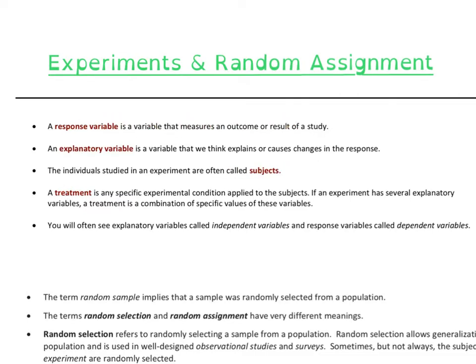The response variable is the outcome that you're measuring in the study. The explanatory variable is what we think would cause the response — this is just another way of saying the treatment. A treatment is what you put on the subject to see what happens, and what happens is the response. A treatment is any specific experimental condition applied to subjects, and if there are several explanatory variables, a treatment is a combination of those variables. We can have more than one treatment in one study, but all those treatments together stand as that one treatment.